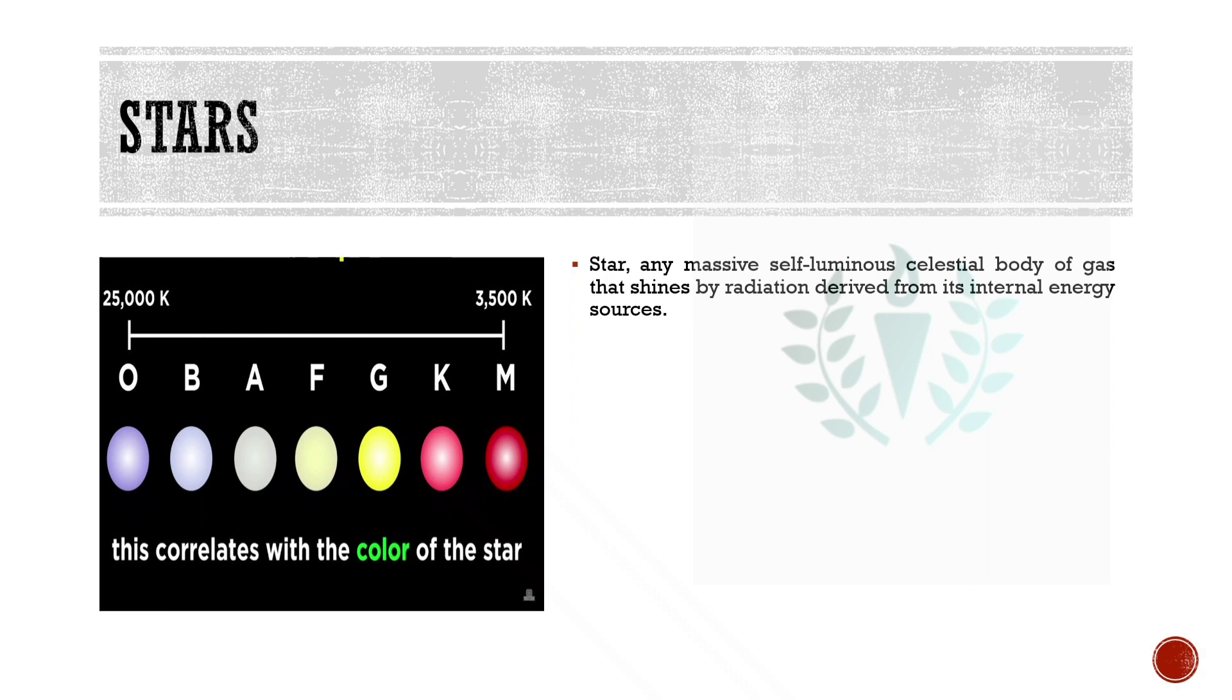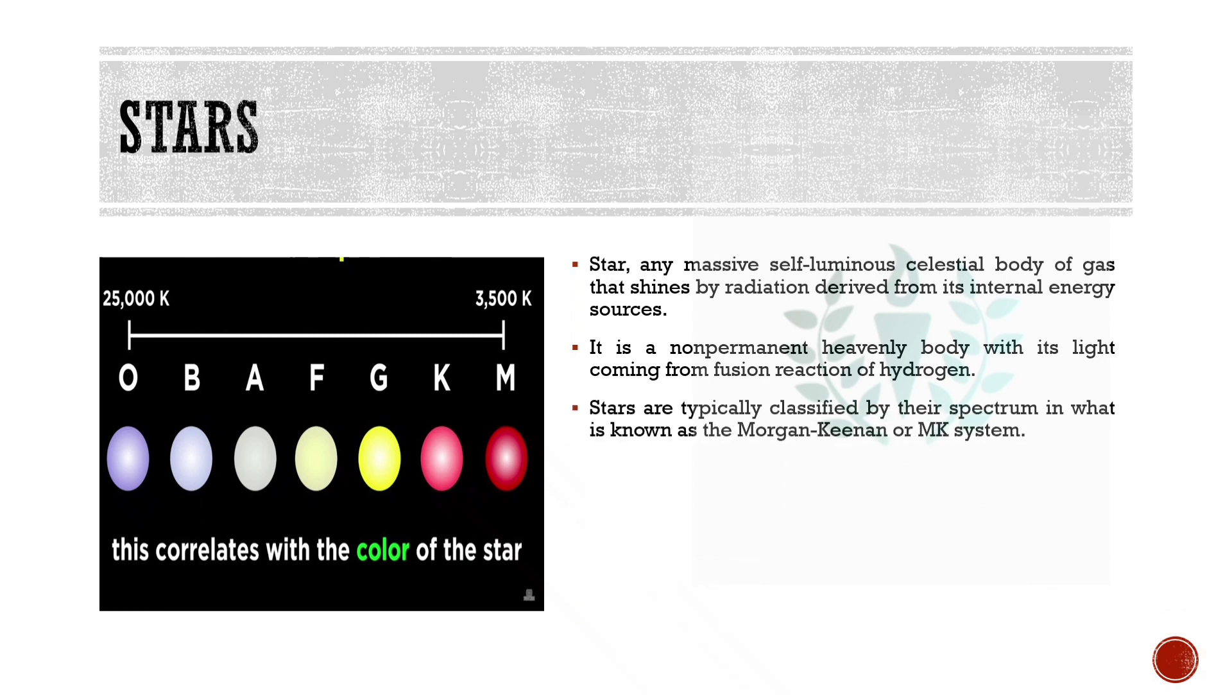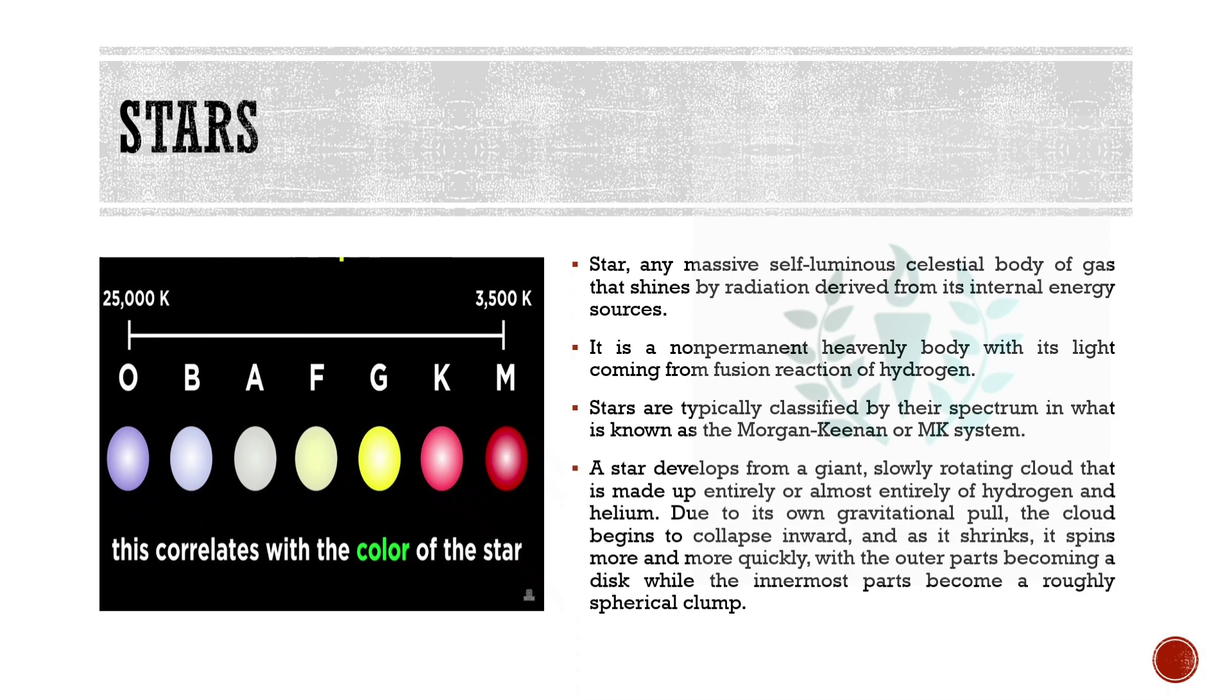Stars. What are stars? Stars are massive self-luminous celestial bodies of gas that shine by radiation derived from internal energy sources. It is a non-permanent heavenly body with its light coming from fusion reactions of hydrogen. Stars are typically classified by their spectrum in what is known as the Morgan-Keenan or MK system. Here you can see in the diagram as well, it is from O, B, A, F, G, K, M from violet to the red.